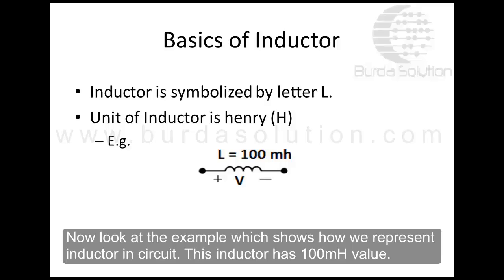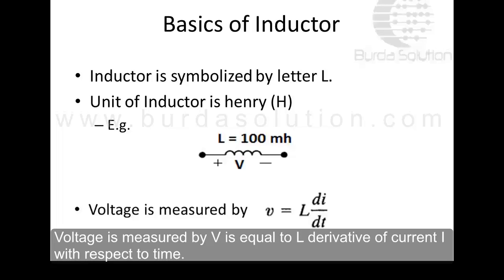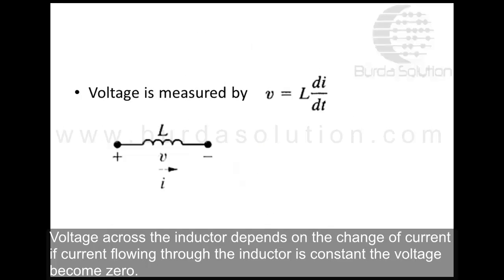This inductor has 100 millihenry value. Voltage is measured by v equals L times the derivative of current i with respect to time. Voltage across the inductor depends on the change of current. If current flowing through the inductor is constant, the voltage becomes zero.